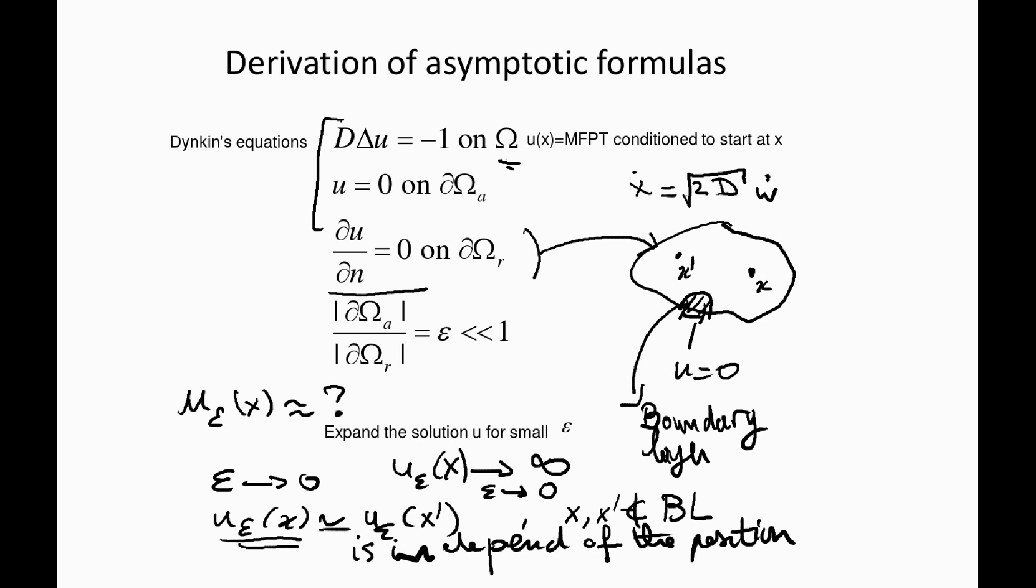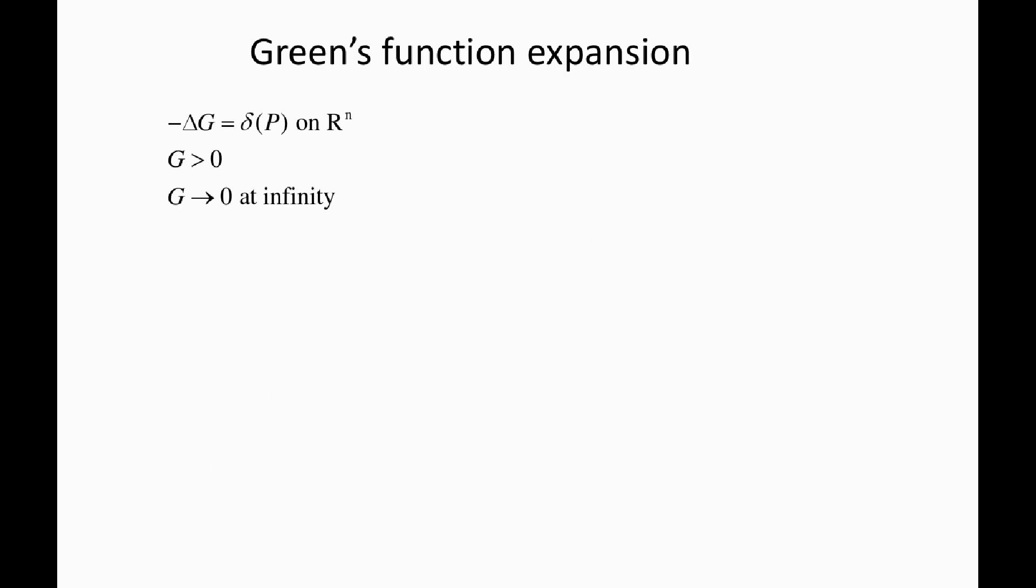For expressing u, we will need what we have seen in previous classes, the Green's function. Let me remind you that the Green's function is solution of minus Laplacian g equals delta Dirac. This positive function, if you are in R^n, you need to impose at infinity that it goes to zero. This is because g otherwise, since it is a function that if you add constants to this, it's also a solution. g plus a constant is a solution. So this will fix the constants to zero.